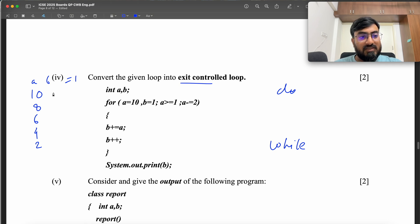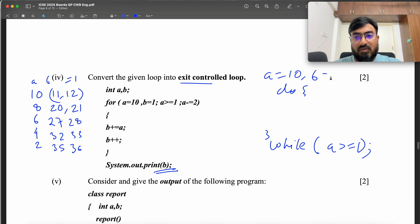B plus equal to A. So 1 plus equal to 10 is 11, and B plus plus, so this becomes 12. Then 12 plus equal to 8, 20 plus 1, 21. Then 21 plus 6, 27 plus 1, 28. Then 28 plus 4, 32 plus 1, 33. Then 33 plus 2, 35 and then 36. System.out.println B is going to be 36.